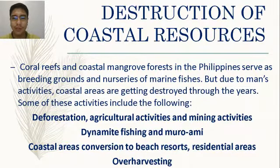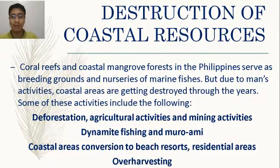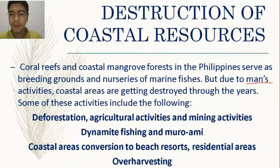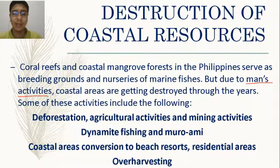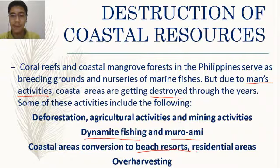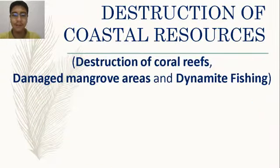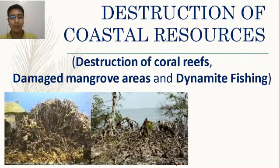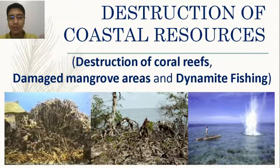Destruction of coastal resources: coral reefs and coastal mangrove forests in the Philippines serve as breeding grounds and nurseries for marine fish. However, due to human activities, coastal areas are getting destroyed. Causes include deforestation, agricultural and mining activities, dynamite fishing, muroami, conversion of coastal areas into beach resorts or residential areas, over-harvesting, and damage to mangrove areas. It is very sad to see beautiful nature being destroyed by human activities.